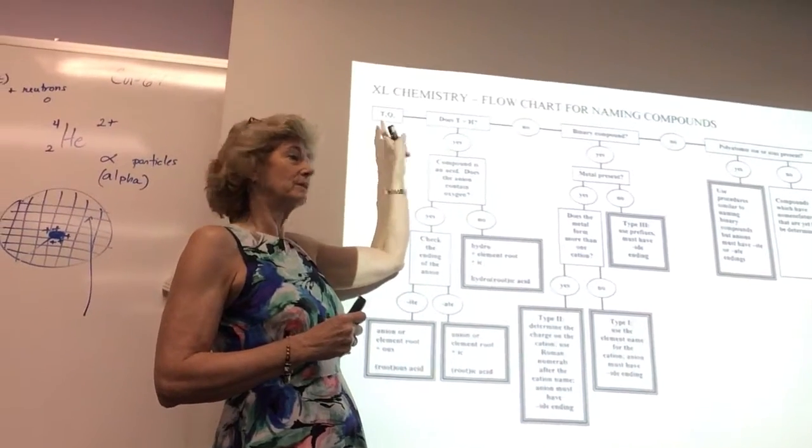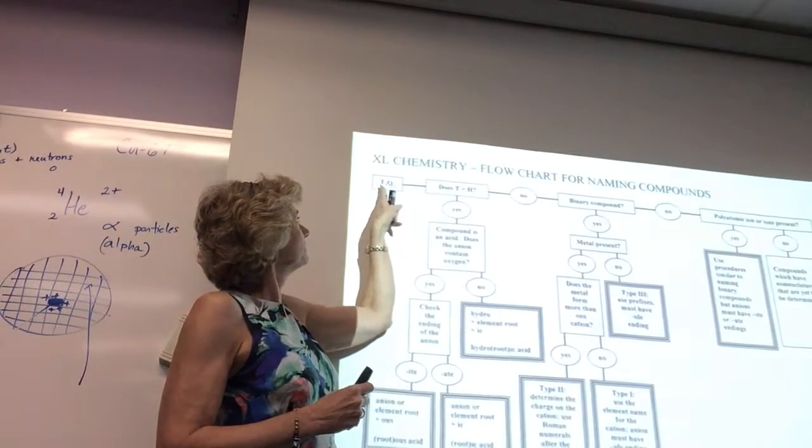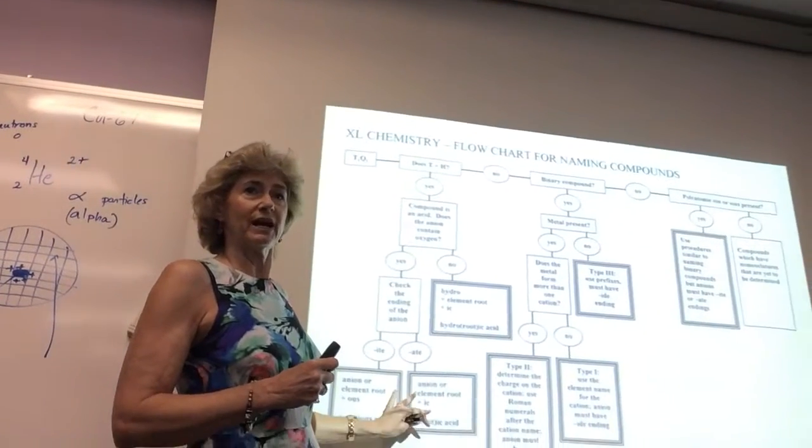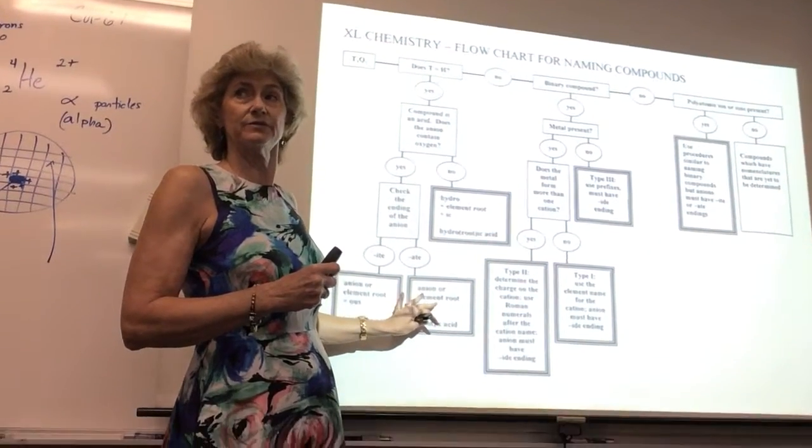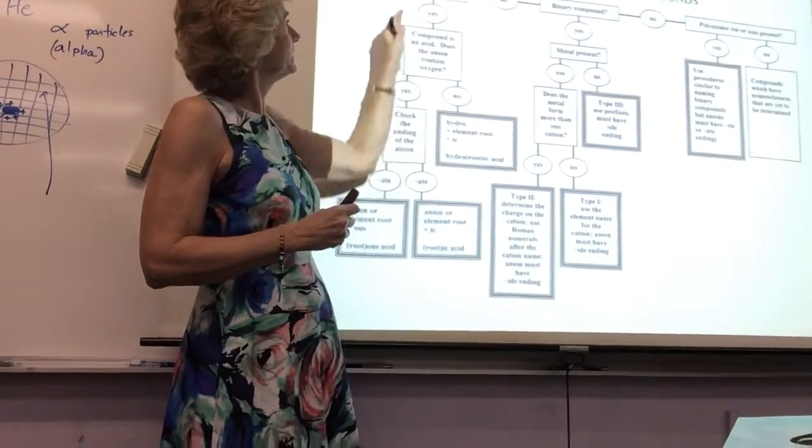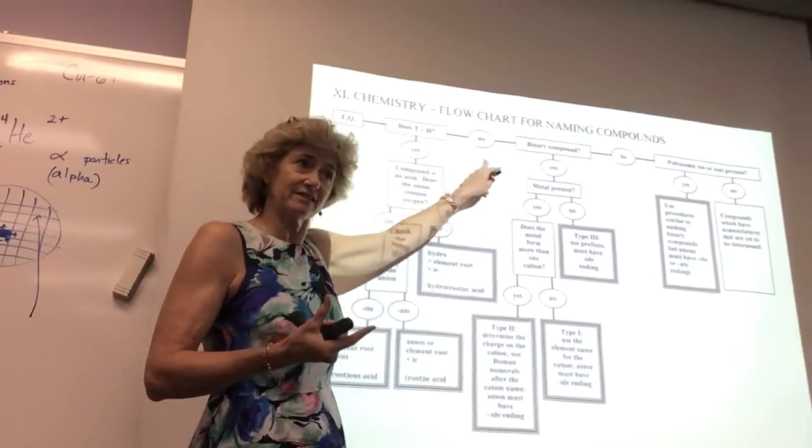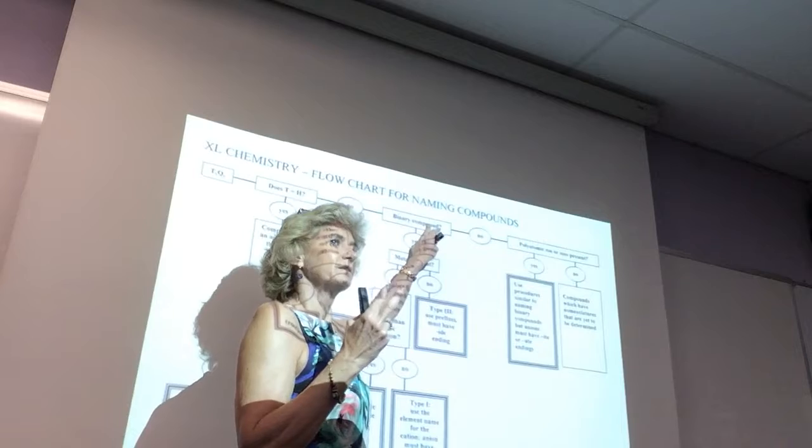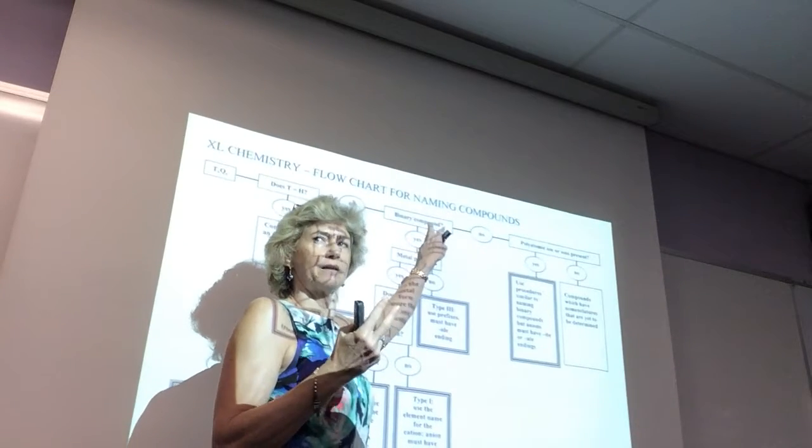All chemical formulas, if the first letter is an H, it's an acid. And we'll cover acid nomenclature when we get to acids. It'll be second semester, so we're going to skip this arm of the flowchart. If the first letter is not an H, it's not an acid. So you go no, and then you ask yourself, are there two things in the compound, two atom types?